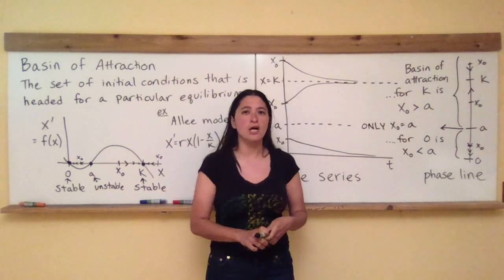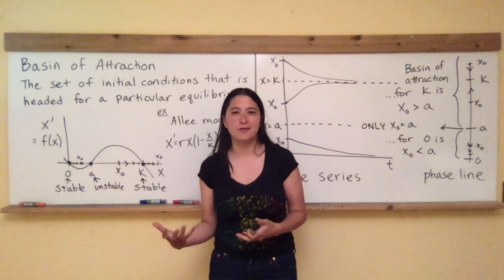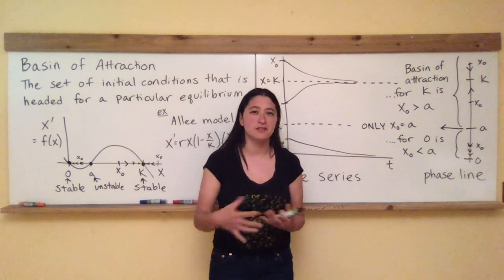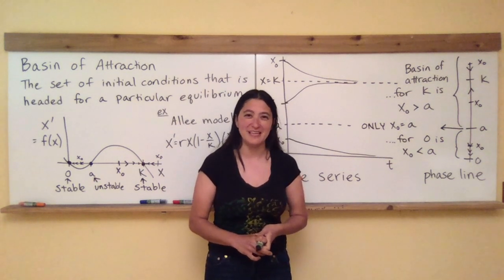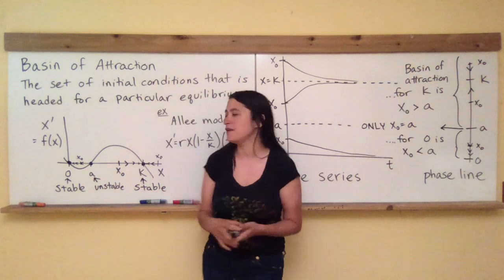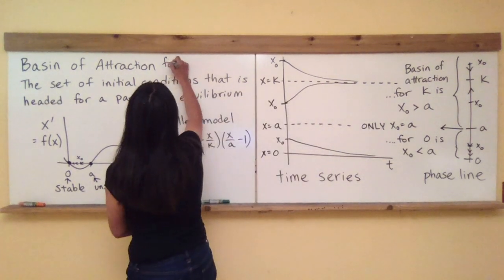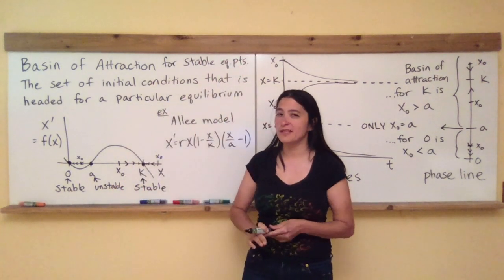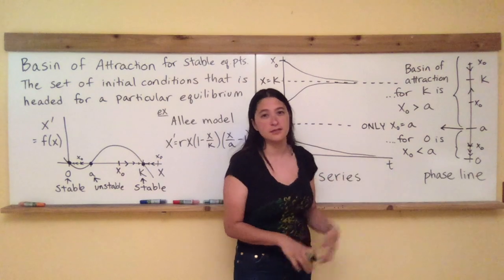When we talk about nodes — a third type of fixed point that is stable from one side and unstable from the other — those have a basin of attraction for their stable side but not their unstable side, and they're described as mathematically pathological in the book. We're going to focus on purely stable or purely unstable fixed points. Basins of attraction are for stable equilibrium points only, because those are the ones where initial conditions head toward them. Unstable equilibrium points technically have a basin of attraction, but it's just one single value instead of an interval.